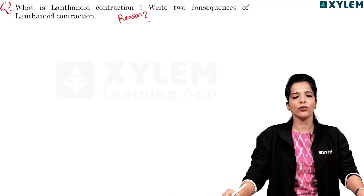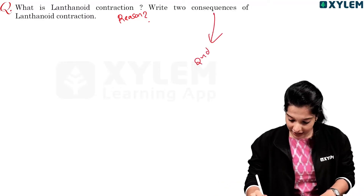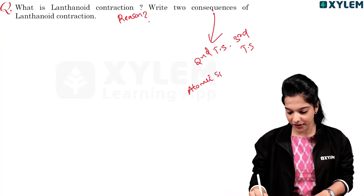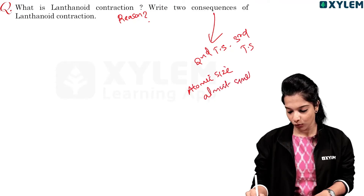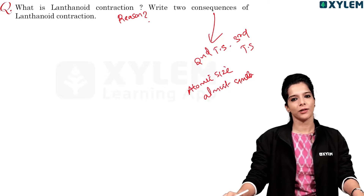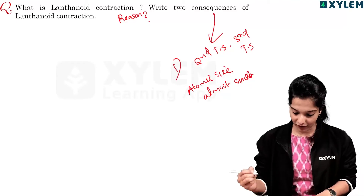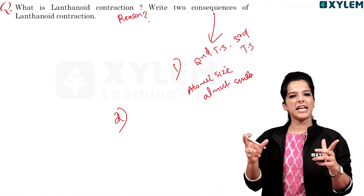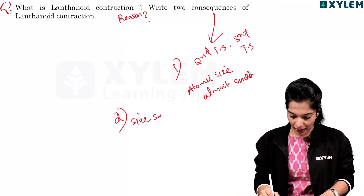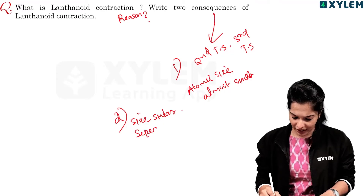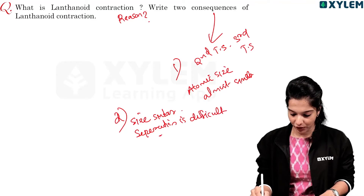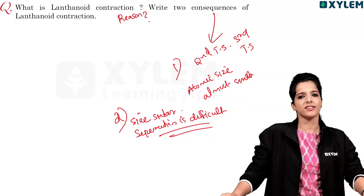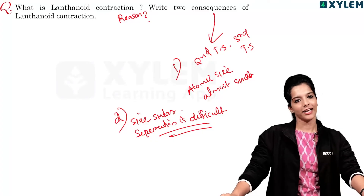Write two consequences of lanthanoid contraction. First consequence: the atomic sizes of the second and third transition series elements are almost similar. Second consequence: separation of lanthanoid elements is very difficult. For example, zirconium and hafnium have almost identical atomic radii and hence similar physical and chemical properties, making their separation difficult.